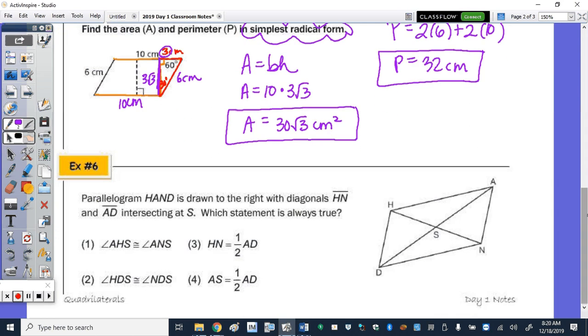Alright, one more question before we do a construction. So we have parallelogram HAND to the right, with diagonals HN and AD intersecting at S. Which statement is always true? Okay? So I'm going to use some colored pen, different colors, to look at each multiple choice answer.